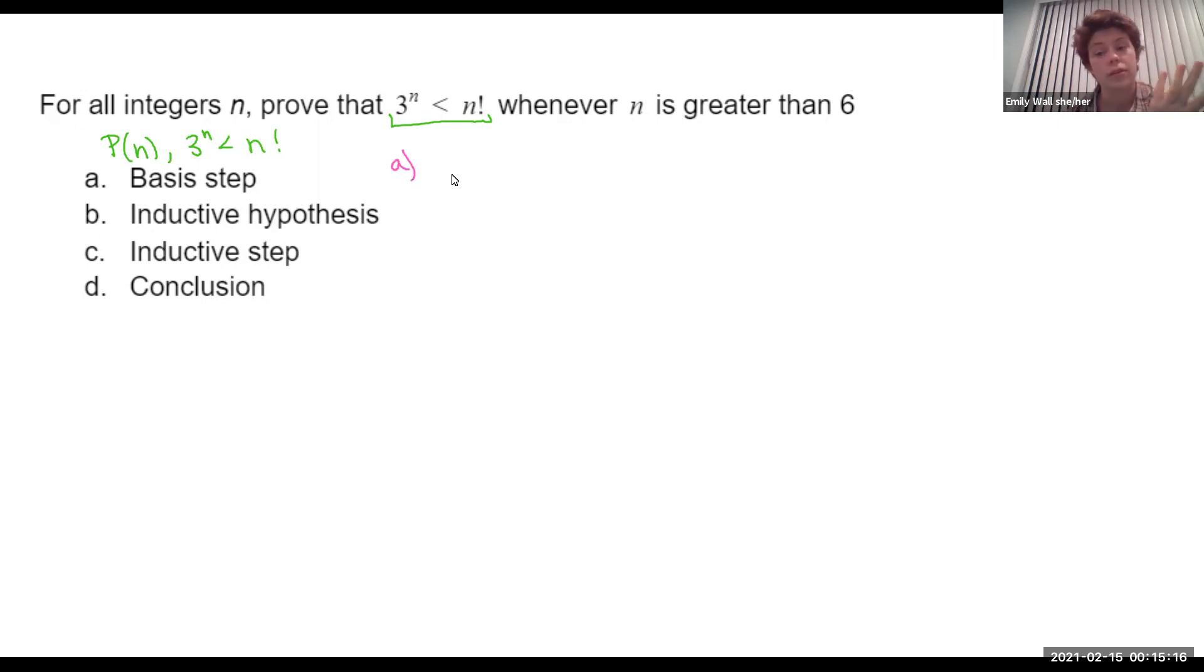We don't have to do this first, but we are in this problem. And where should we start? Well, n is greater than 6, so we're going to prove P(7) as the bottom rung.